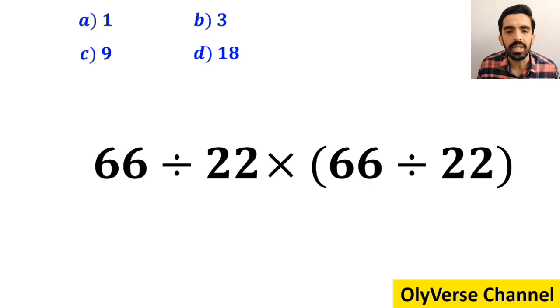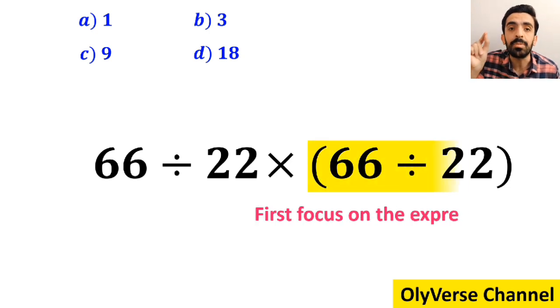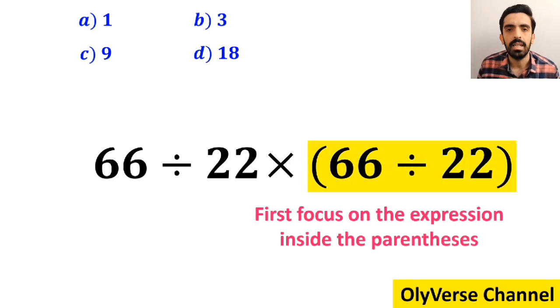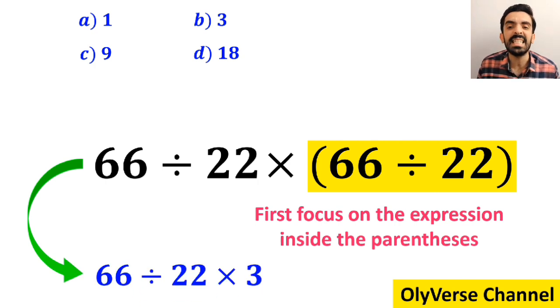Many people when starting to solve this question first focus on the expression inside the parenthesis and instead of considering the whole expression, they rewrite it as 66 divided by 22 multiplied by 3.